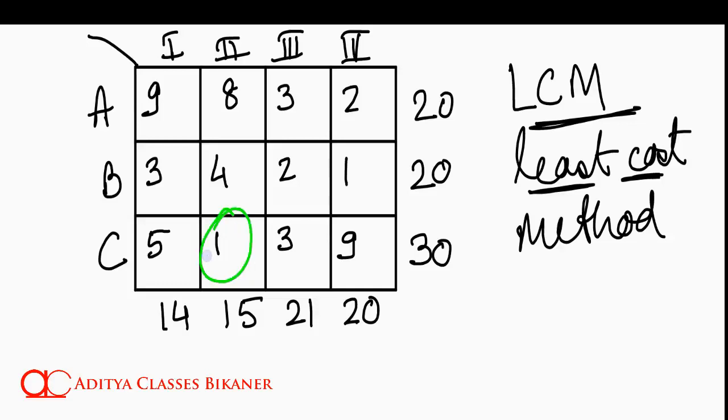Suppose, I go ahead and select this cell, that is C second. If I select the C second, how much am I producing at C? I am producing 30. How much does this second source destination need? It needs 15. So, I am producing 30. It needs 15. How much will they deal upon? How much will they transact? They will transact for 15 units. Because C is producing 30, though it may be producing 30, but second only needs 15 units. So, they will deal for only 15 units. Got the idea? Didn't get it? No issues. Let us discuss once again this thing for the next one.